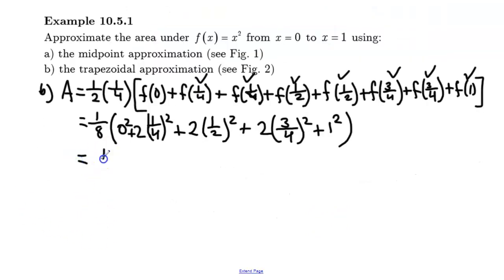So let's crunch some numbers here. I've got one eighth. I don't have to worry about the zero. A quarter squared is one sixteenth times two is another one eighth. Half squared is a quarter times two is a half. Three quarters squared would be nine sixteenths times two would be nine eighths. And then one squared is one, obviously.